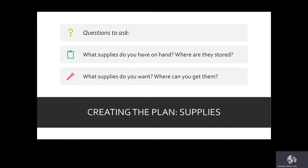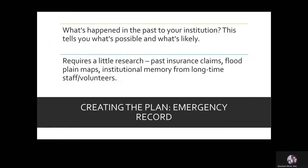To recap the supply inventory: determine what supplies you already have on hand and where they're stored, then ask yourself what supplies you want to get and where you can get them. Keep your inventory updated, checking the supply cache from time to time. Now moving on to the final section of the disaster plan: the record or history of previous emergencies or disasters that your institution has faced. What's happened in the past will tell you what's possible and what might be likely to happen again. This section will require a little research — asking long-time or former employees or volunteers to search their memories of past incidents, and checking the floodplain maps for your region.